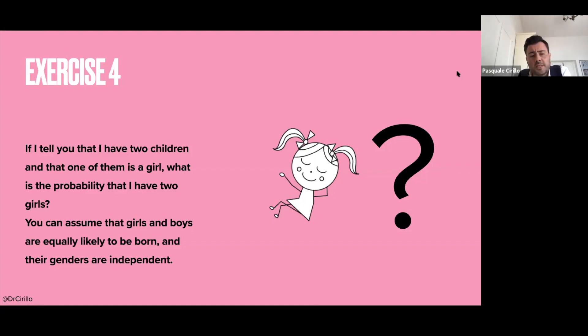Now, this is the exercise. I tell you that I have two children, and I also tell you that one of my children is a girl. Now, my question is, what is the probability that also the other essentially is a girl such that I have two girls.